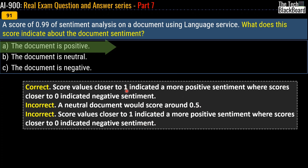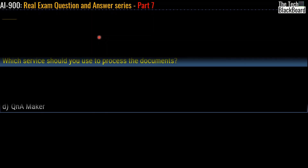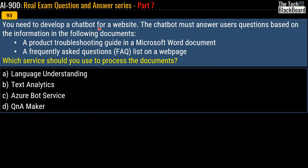Question 92: which service should you use to create a knowledge base for bots? Options are conversational language understanding, question answering, or Azure bots. The correct answer is option B, question answering. Question 93: you need to develop a chatbot for a website that answers users' questions based on a product troubleshooting guide in a Word document and a FAQ list on a web page — which service should you use? Options are language understanding, key analytics, Azure Bot Service, or QA Maker. The correct answer is option D, QA Maker.